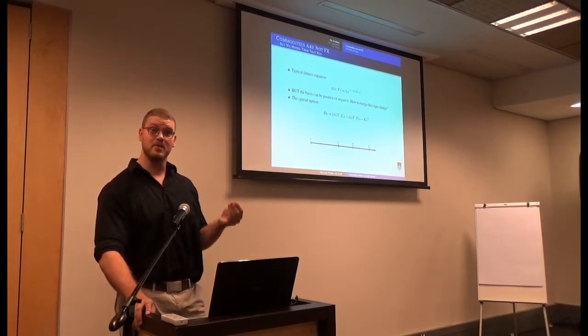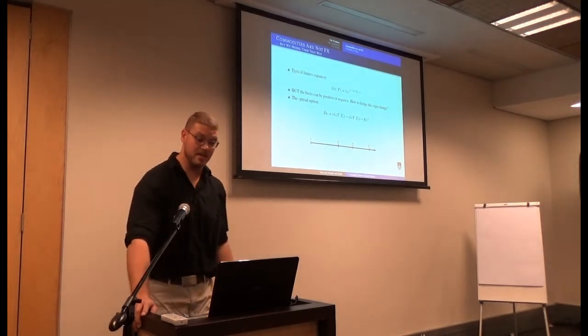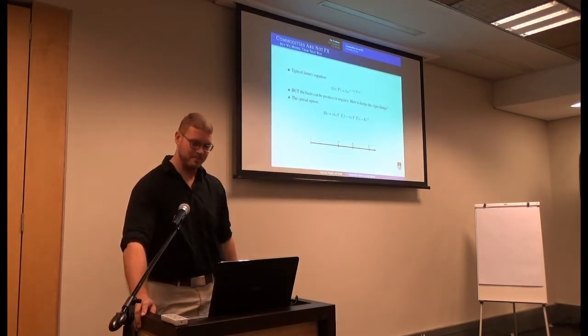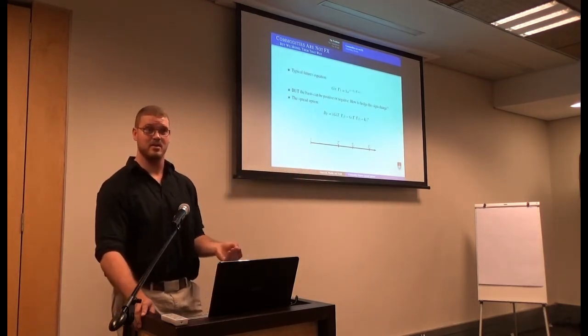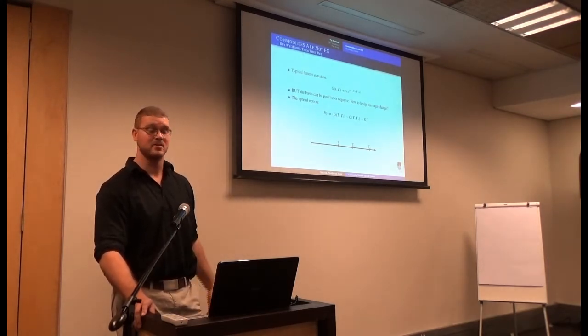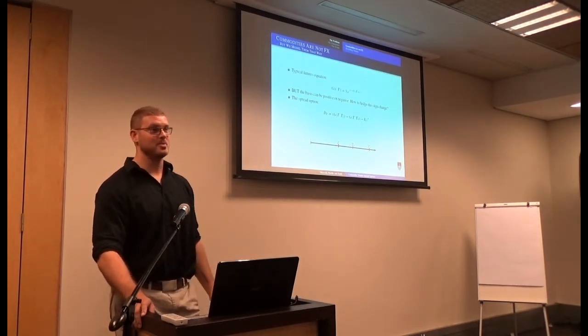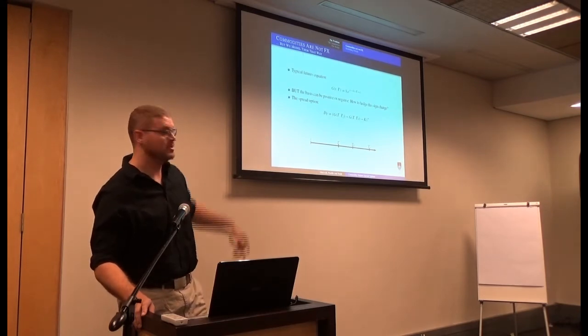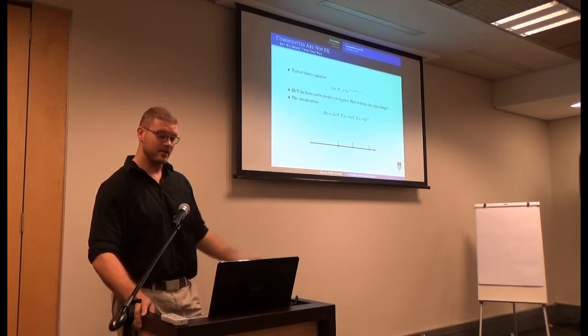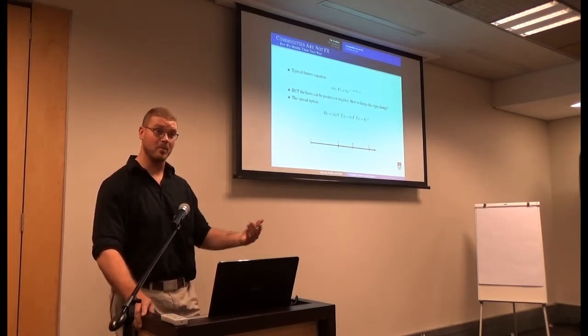This happens to not be the case in the commodities futures market. What can happen is the sign of the commodities futures curve can change. So the basis can be either positive or negative, where we define the basis as the difference between the spot and the future. The question is, how can we hedge this sign change? And Jason's solution to this problem was, sell me this option, the spread option, which is a call on the difference between two points on the futures curve. I just briefly outlined what our time horizon looks like there. The long-dated future will mature at cap T2, the short-dated cap T1, and the option will mature at cap T.